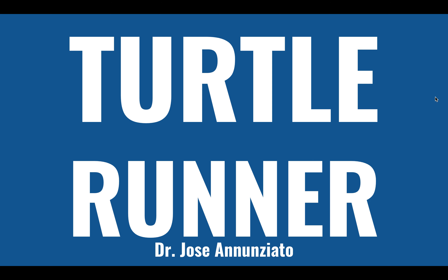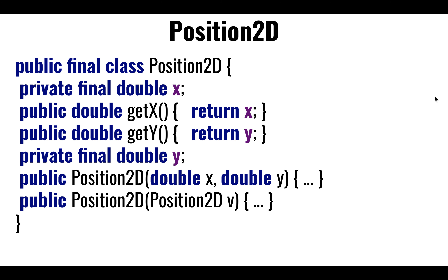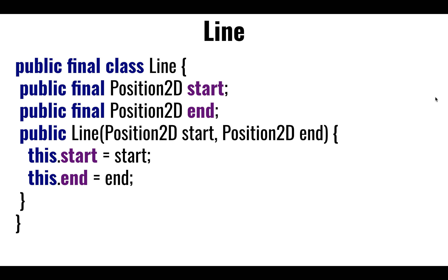So let's talk about the turtle runner. First, let's look at the model of the turtle. This is the same exact model that we looked at before. We're representing the turtle in terms of a position — where it is — and we had a class to represent the X and Y position of the turtle. We also had a mechanism for representing the lines that the turtle traced, whether a single line or multiple lines to make a square. We're representing it as a composition of two points — where the line starts and where the line ends.